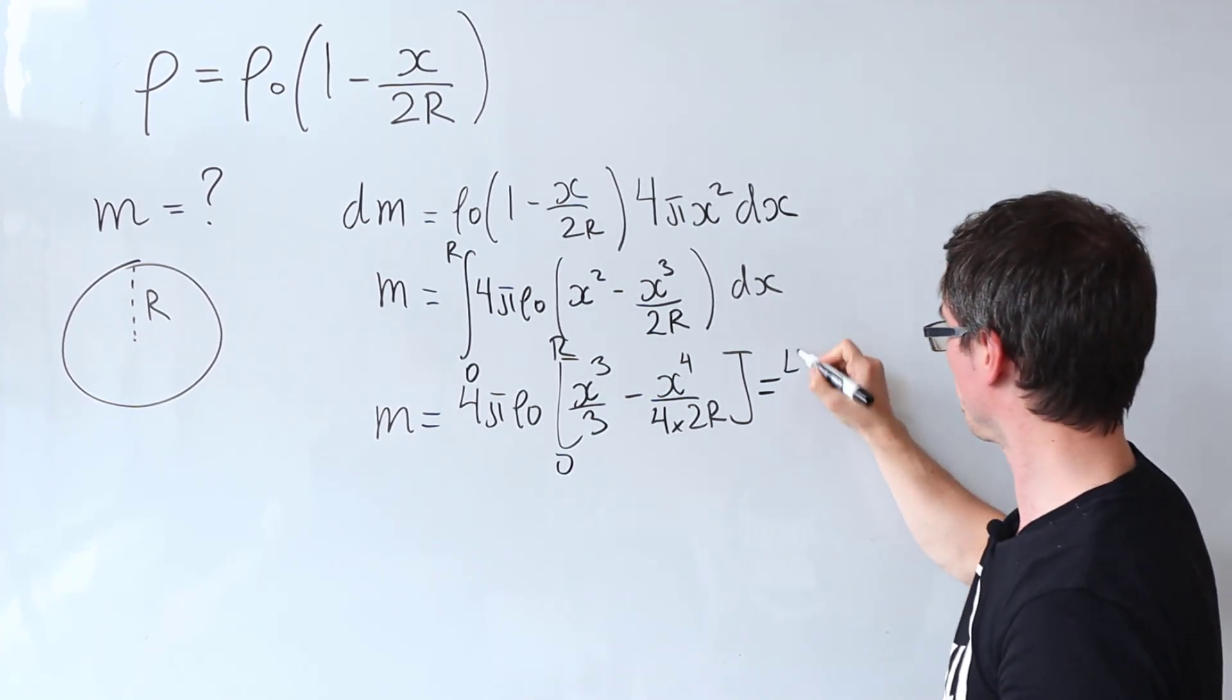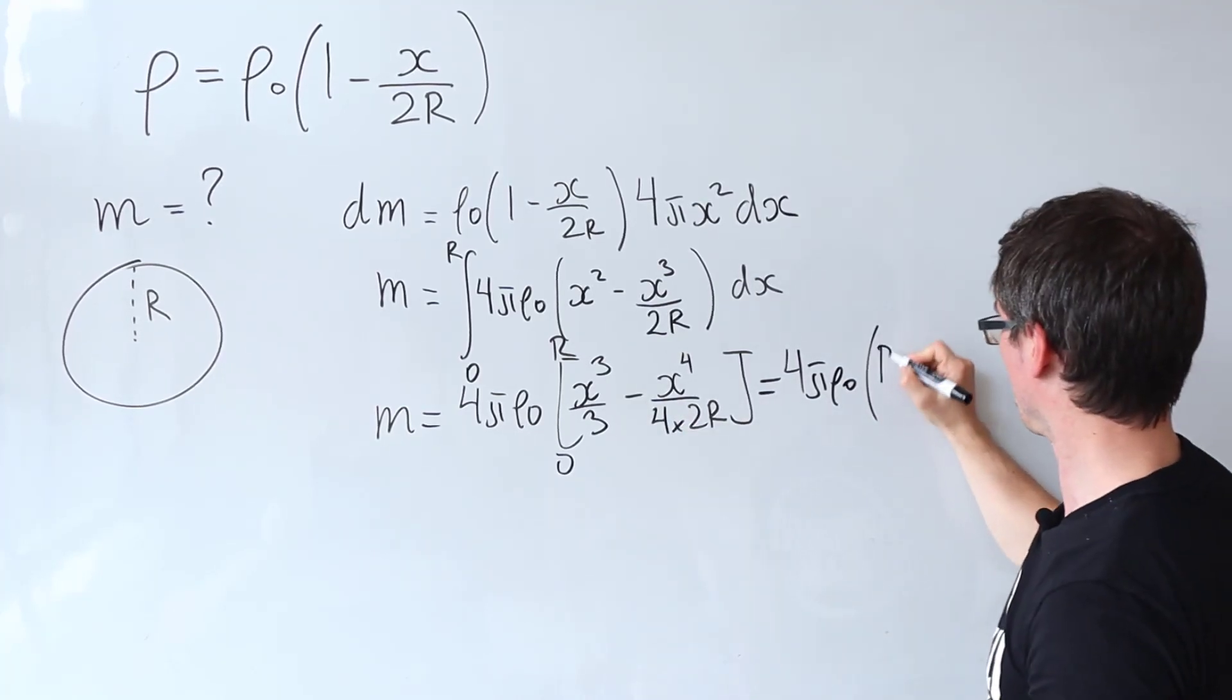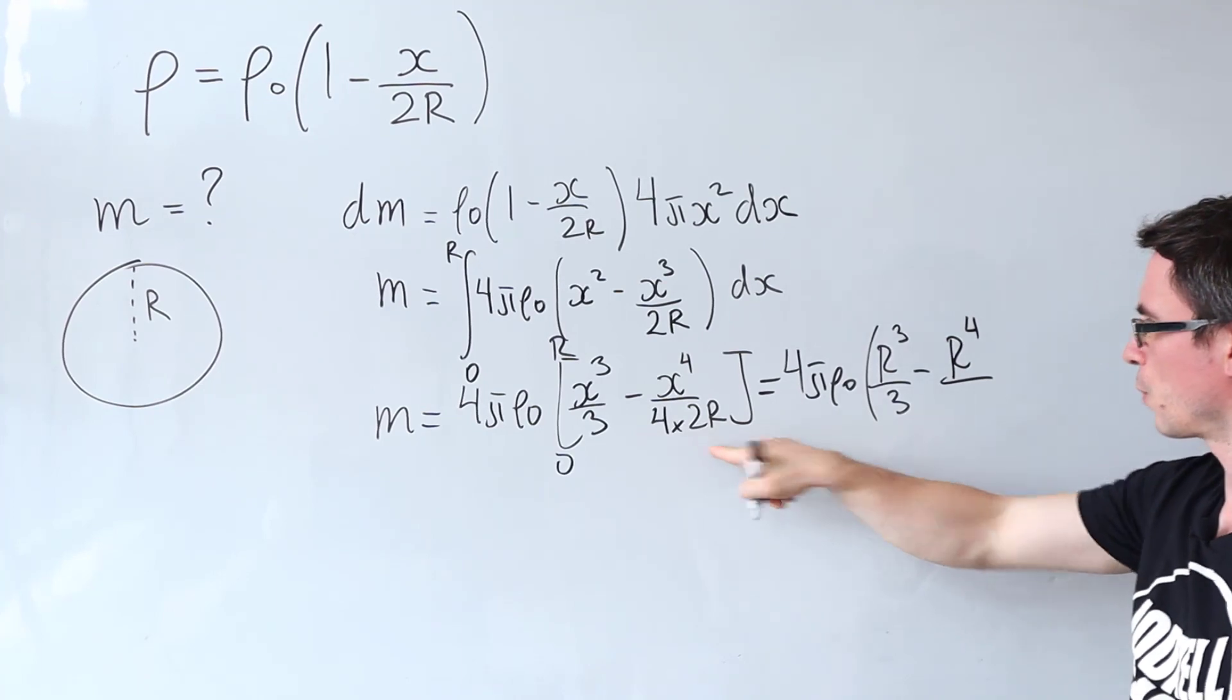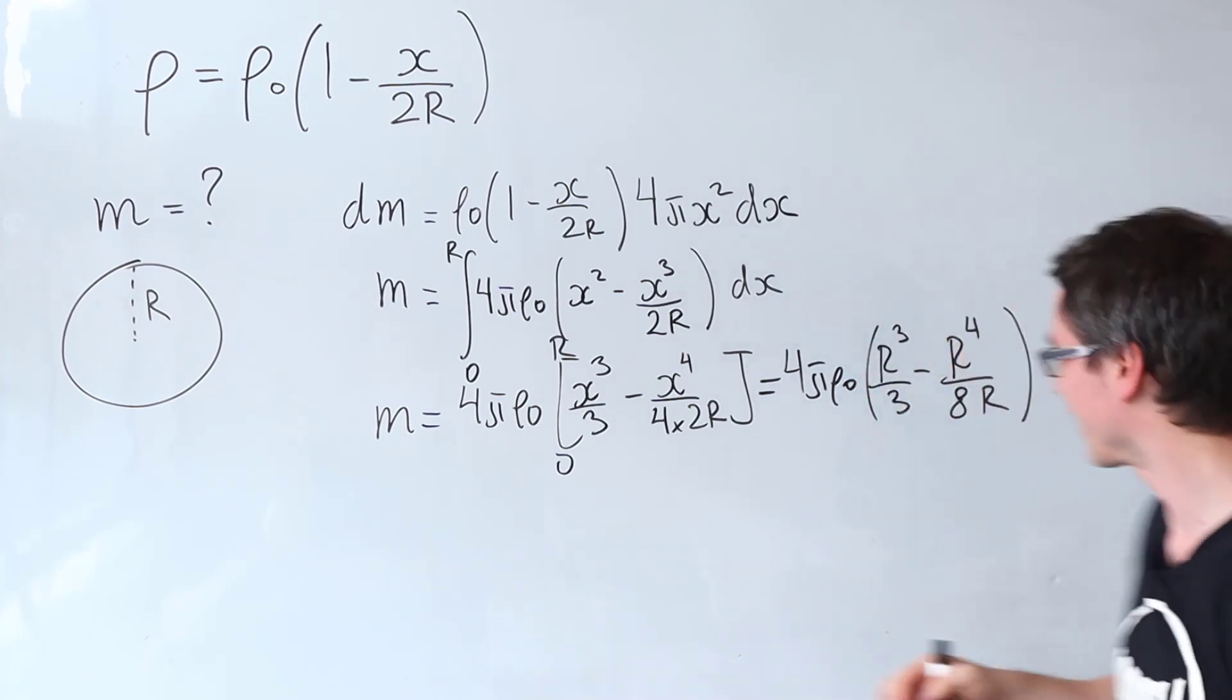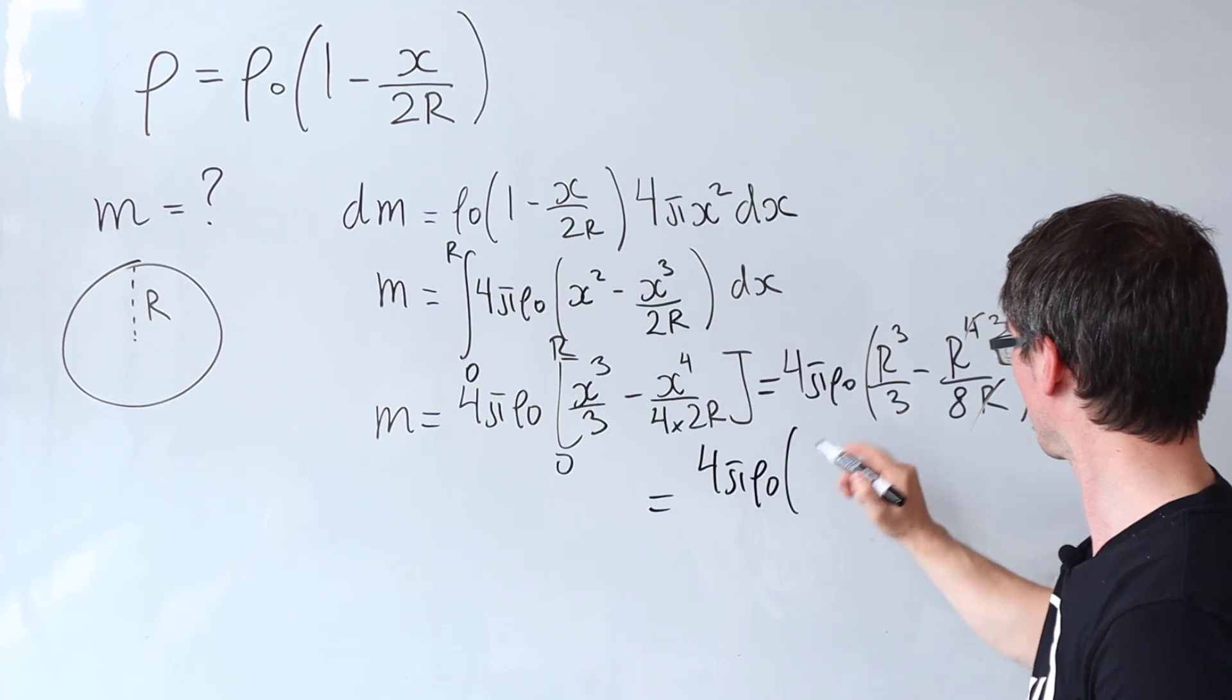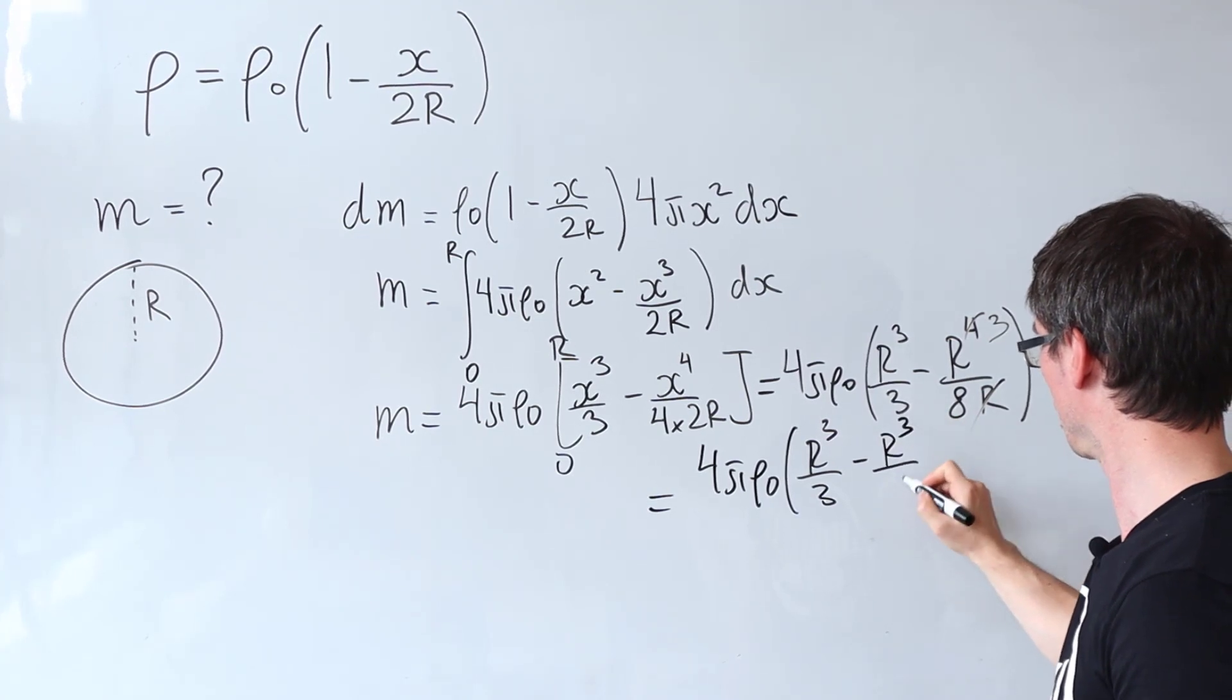So what are we going to be left with? We're going to be left with 4πρ₀ and then we are going to have r³/3 take away r⁴ divided by 4 times 2 which just gives me 8r. And now we can also do my second favorite thing ever and that is to be canceling out terms in equations. So this r here can go and that's going to change that to r³. Okay well what is that going to give me?